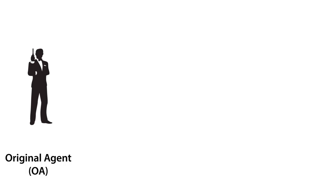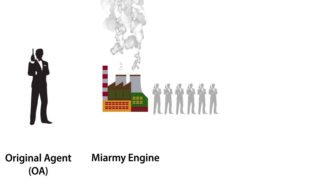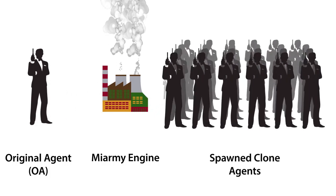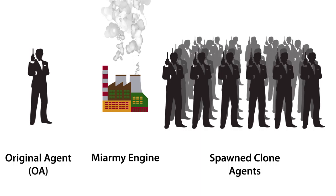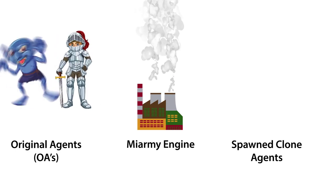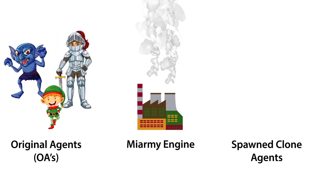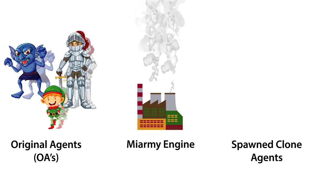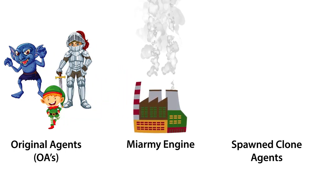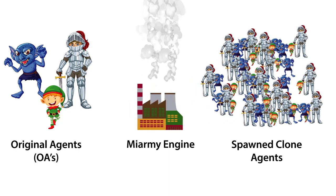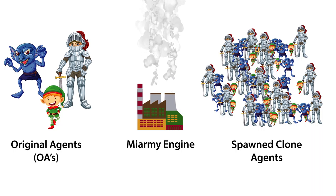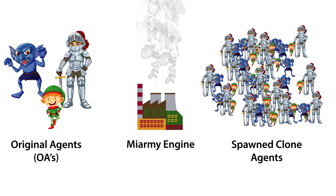First off is the idea of an original agent. The original agent is the blueprint or template for creating your massive army of clones. You can have more than one original agent in a scene — one for humans, one for orcs, one for elves, etc. But the original agent never actually shows up in your scene. Miarmy takes the OA — from now on we'll just call original agents OAs for short — and uses it to create individual crowd members. Note that the individual members of the crowd are also called agents; they're just not original agents.